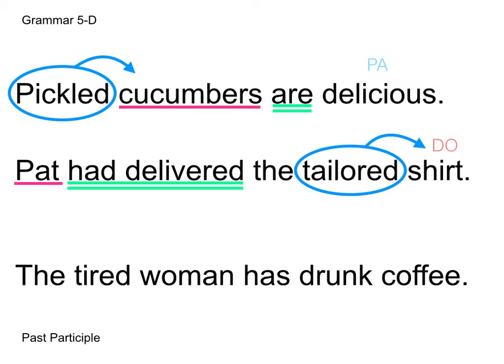And one last one just to drive it home: The tired woman has drunk coffee. Woman is our subject. What is she doing? She has drunk. And what is receiving that action of being drunk? It's going to be coffee, which is our direct object. And tired is also going to be a modifier — it's our past participle and it's telling us what type of woman it is. She's tired, she's ready for bed, but she just had some coffee! Notice how we still have that past participle as our main verb, right next to another noun, but it's not modifying that noun — it's the action being completed by the subject. So make sure you're watching out for main verb versus past participle as an adjective.